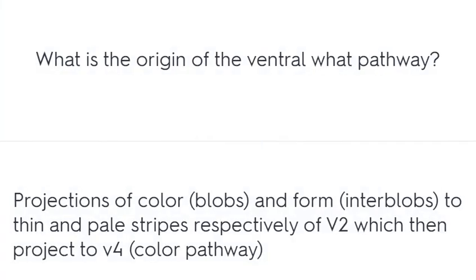What is the origin of the ventral 'what' pathway? Projections of color and form to thin and pale stripes respectively of V2, which then project to V4.